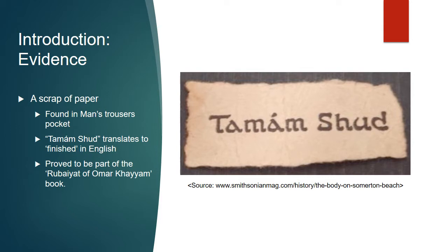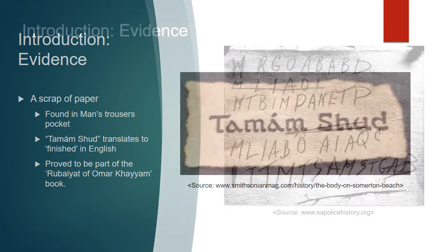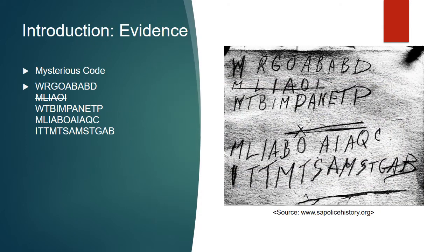It was proved to be part of the Rubaiyat of Omar Khayyam book. At the back of this book there was a mysterious code with four different lines, and there was a fifth line that was scratched out.